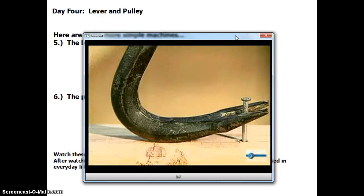A crowbar is another example of a first-class lever. Here is the fulcrum. The load is the nail, and the effort is applied to the opposite end of the bar.